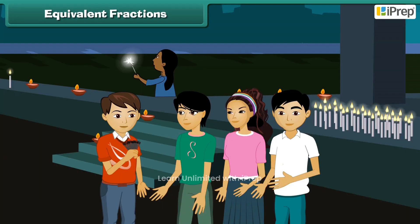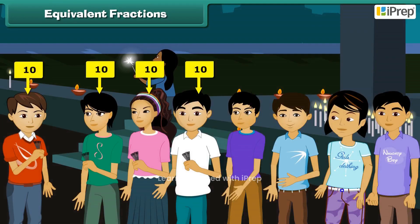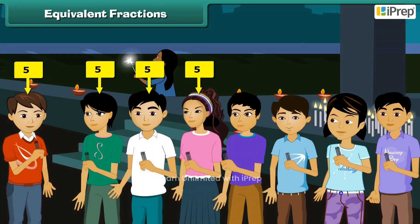Rishabh is celebrating Diwali with three cousins. He has 40 sparklers. He divides the sparklers into 4 equal groups of 10 each. Quite unexpectedly, four more cousins of Rishabh arrive to celebrate the festival with him.